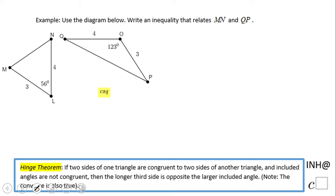Welcome or welcome back. I need help at C-square. In this example, we're going to use this diagram below and we want to write an inequality about MN, this side, and QP, this side.